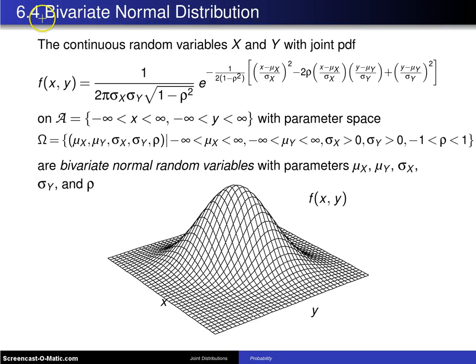This begins section 6.4, which covers the bivariate normal distribution. Back when we had univariate random variables — that is, one random variable at a time — we took two chapters, namely chapters 4 and 5, and looked at discrete and continuous distributions that arise commonly in practice.